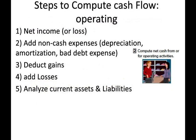For Step 2 — computing the operating section — I use five sub-steps. These are not a FASB rule; I made them up as a framework. Sub-step one: start with net income or net loss. Sub-step two: add non-cash expenses.